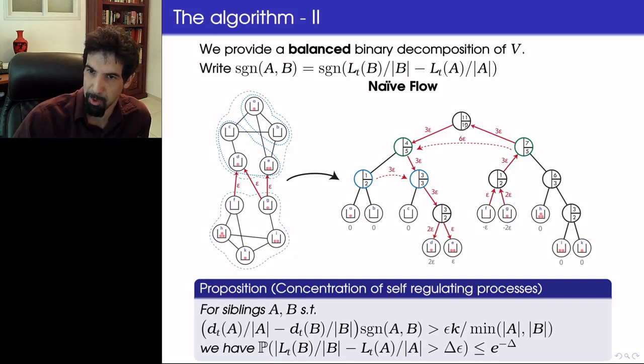So I put more information into this tree decomposition. Now in every node, I have two numbers. The bottom one is the number of bins in the set. So here it's 10, the entire graph, and every half is 5, and so on. The top one is the current load of all the bins together. So the total load of the graph is 11, and here we have four balls in the set A,B,C,D,E, and seven balls in the set F,G,H,I,J, and so on.